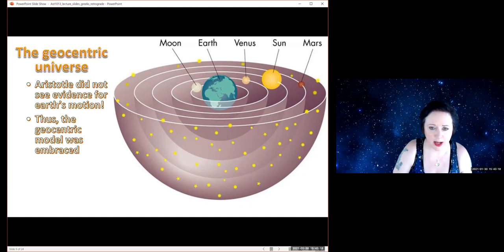And so in his model, we have the Earth in the middle, and the moon and the planets and the sun all going around it, all inside a big sphere that has all the stars on it. And this is the geocentric model, which we'll get into in another video.